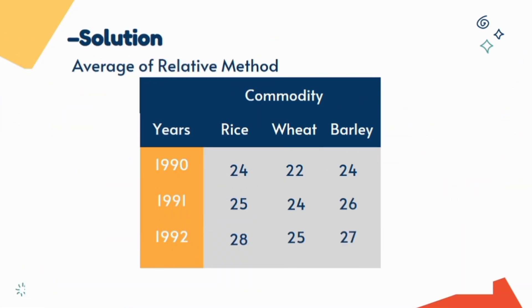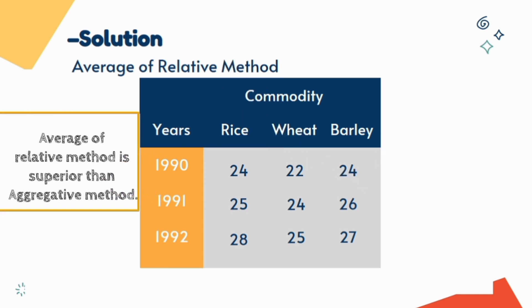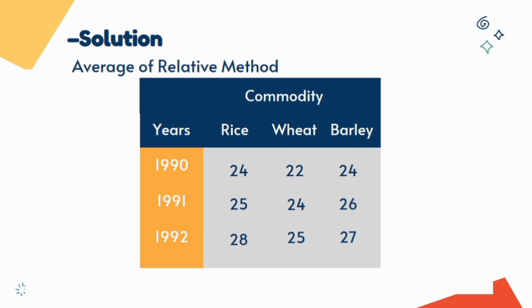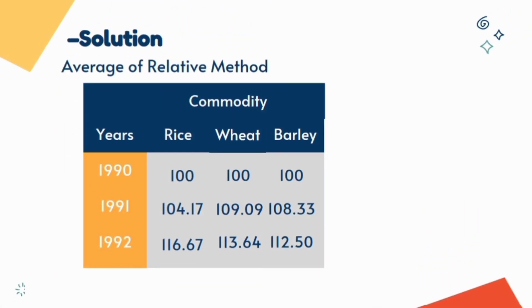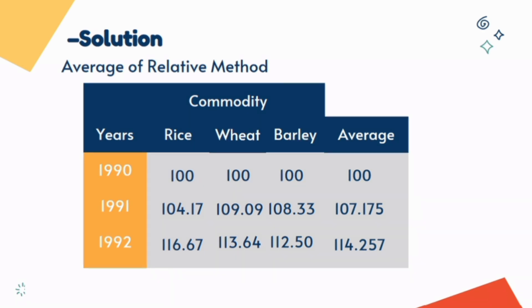And in average of relative method we first find the price index. That means for rice the base price is 24, for wheat the base price is 22, and for barley the base price is 24. Then we apply average and normally we prefer geometric mean.